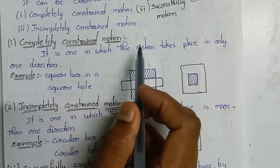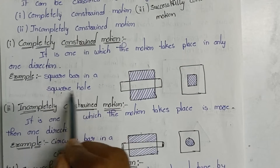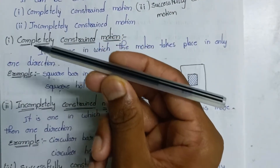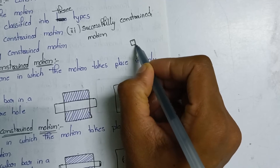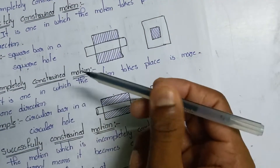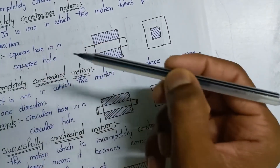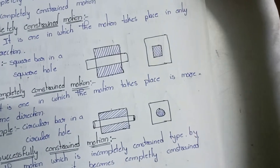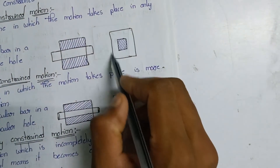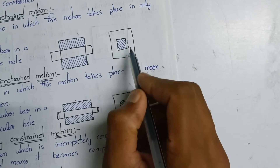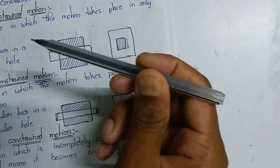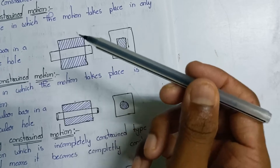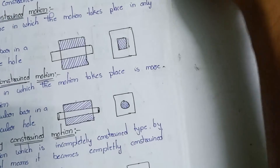The example of completely constrained motion is a square bar. A square bar has the same length and breadth. When a square bar is placed inside a square hole, it can only slide — it has no chance to rotate. Only one motion is possible. In the diagram, there is a rectangular block with a square hole in the middle. The square bar placed in the square hole can only move in one direction — this is completely constrained motion.